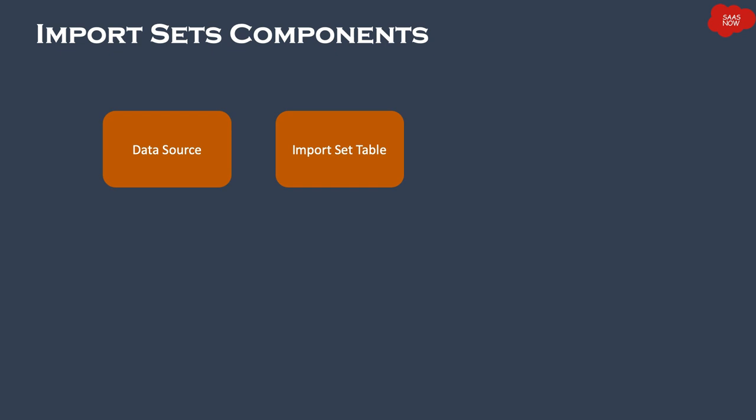It's a staging table — before putting anything into the real target table, you first put the source data into this staging table, and then that data is transformed. Then you have the Transform Map, which creates the relationship between fields of the source data and the target table.